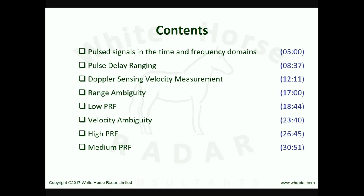In spite of the complications of range and velocity ambiguities, medium PRF has several advantages over both low and high PRF waveforms, especially when strong clutter returns are present — that is, the unwanted echo from the surface. Finally, we review a summary of these topics and make a few closing remarks. The numbers in blue to the right are the times at which these various topics start, given to help you fast-forward directly to specific topics.